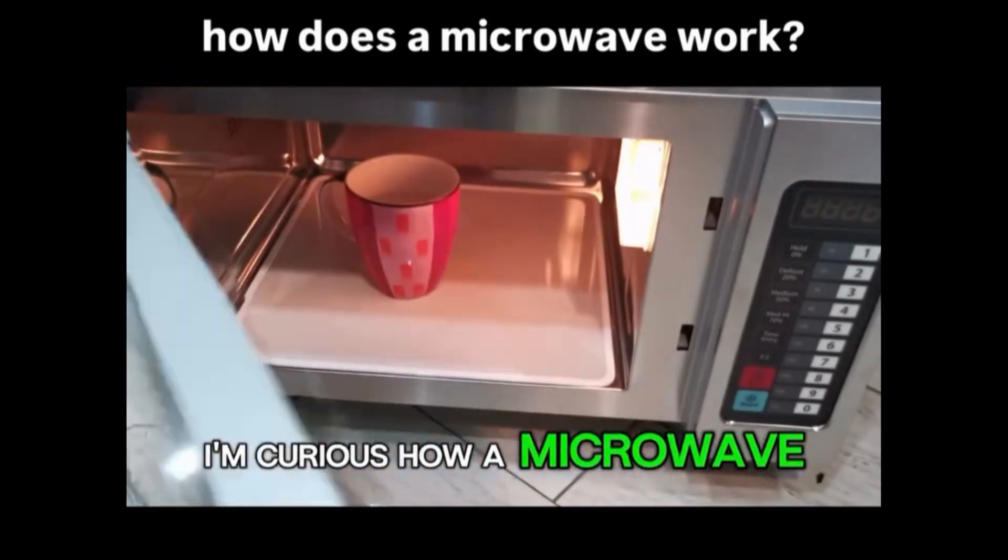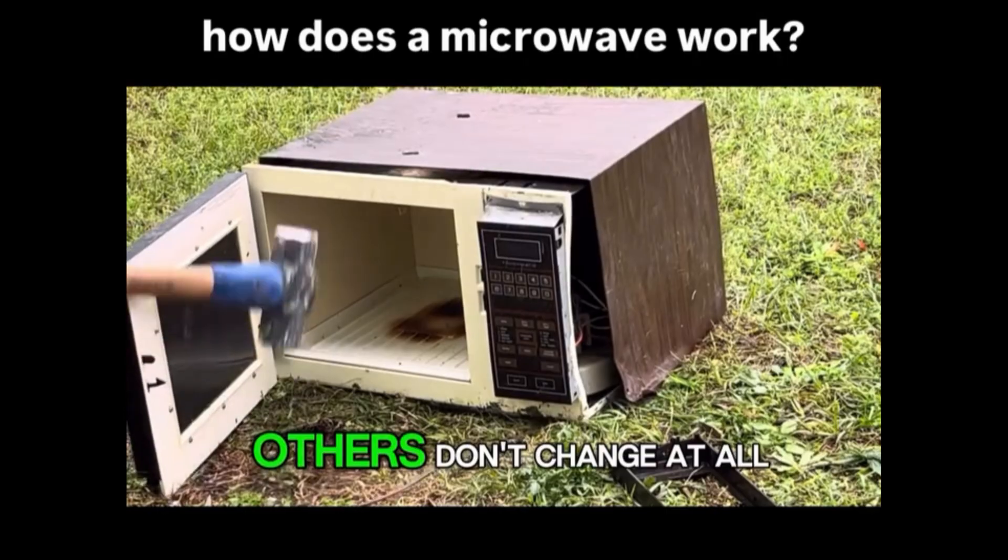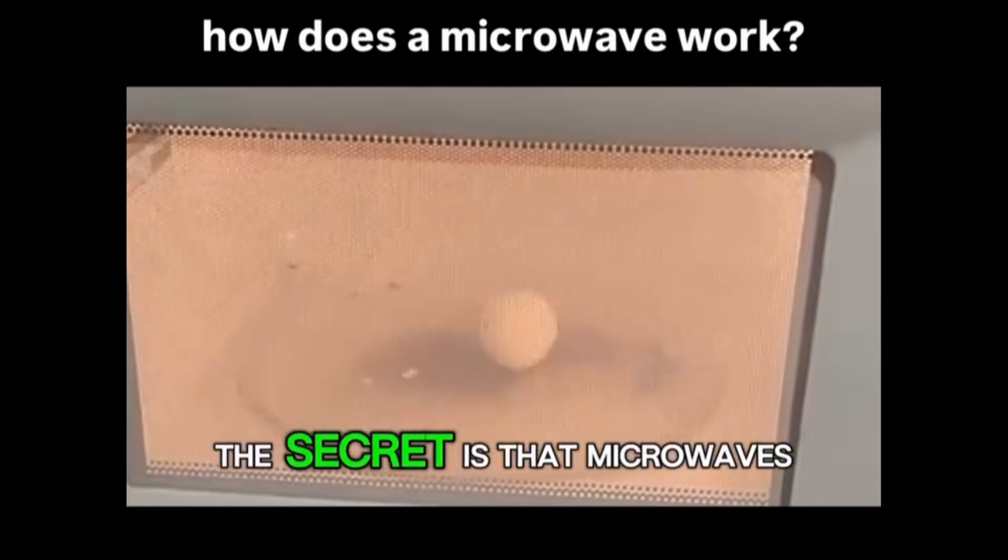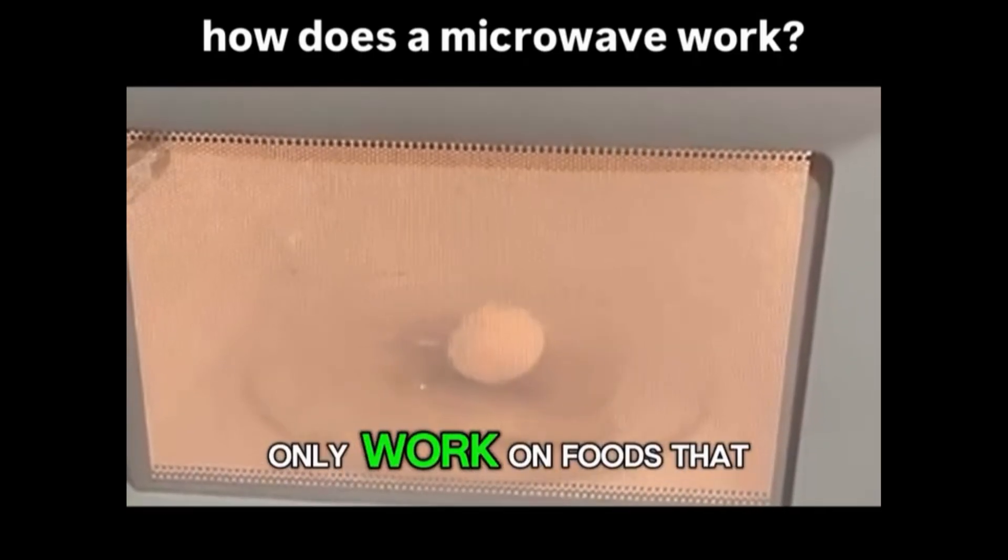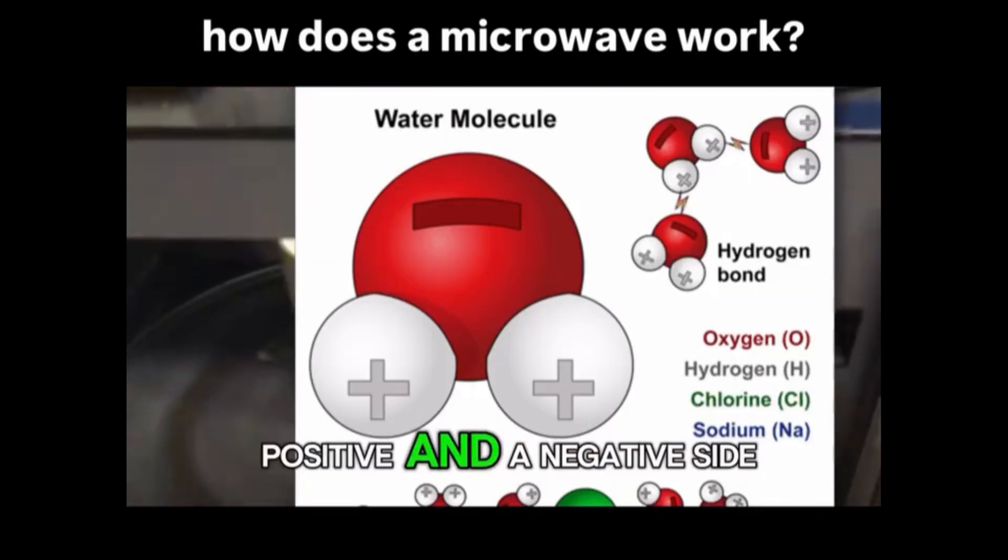I'm curious how a microwave works and why some food will get boiling hot while others don't change at all. The secret is that microwaves only work on foods that contain water. Each water molecule has a positive and a negative side, which is what the microwave targets.